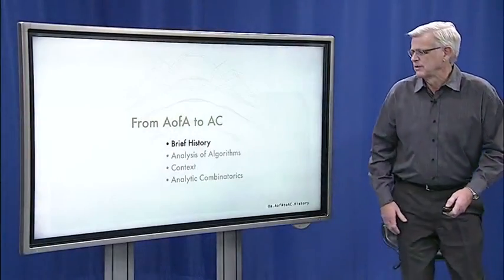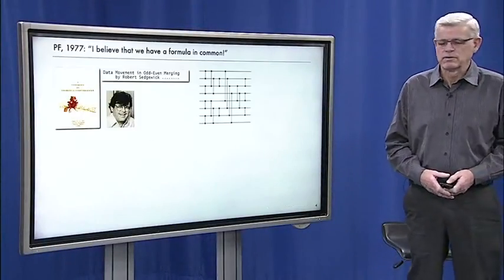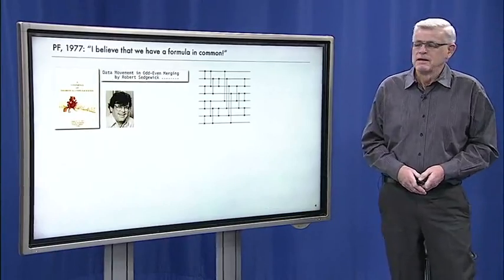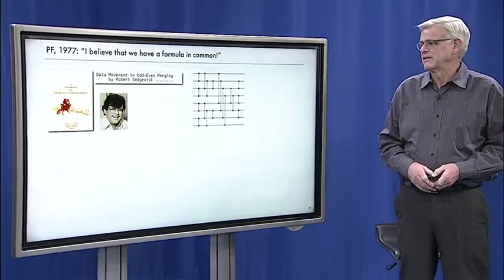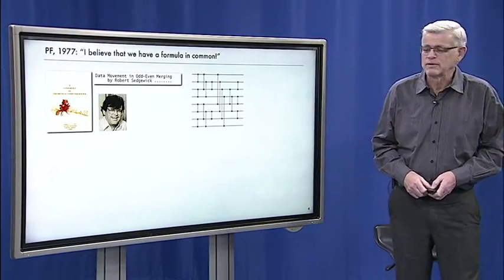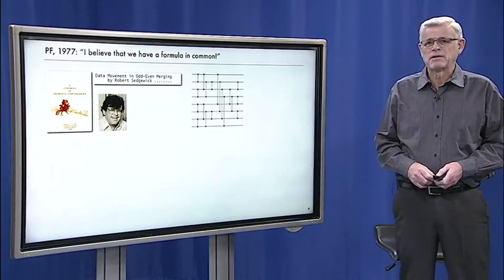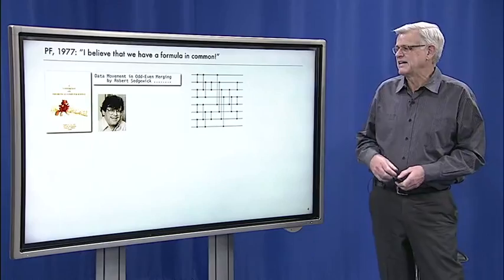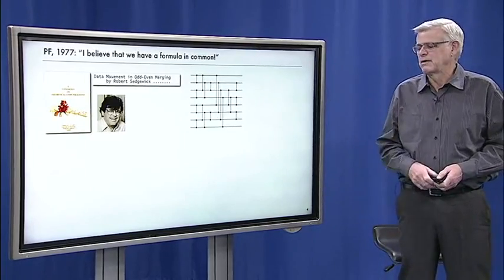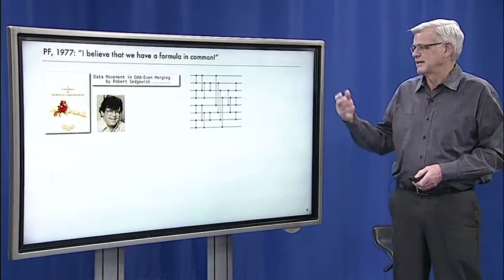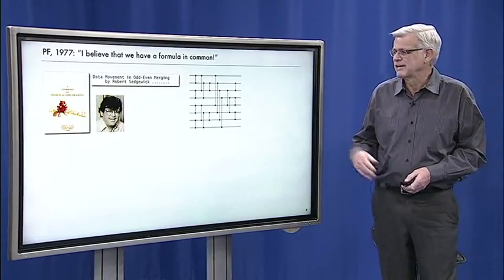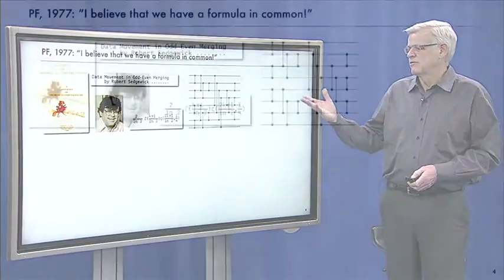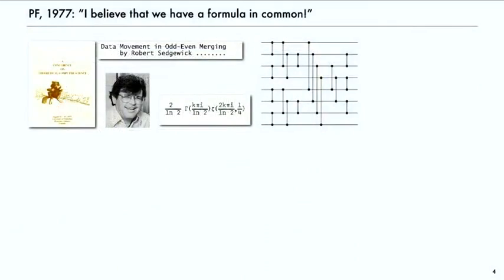I'll start off with a brief history to try to give some context for how we got there. I first met Philippe in 1977. My first research paper that I wrote after getting my PhD was on an algorithm called odd-even merging. In those days you would get your paper typed by a secretary and go to a conference and present it. I was very proud to have developed this formula that involves the gamma function and the zeta function and gives a precise description of the performance of this particular algorithm.